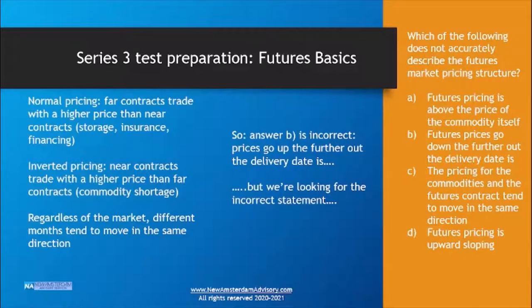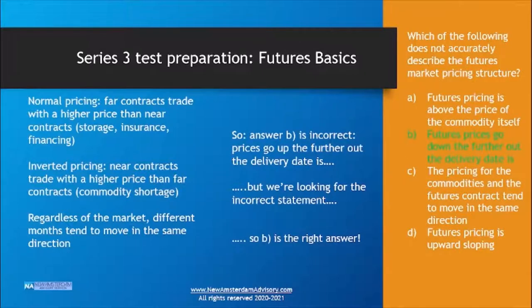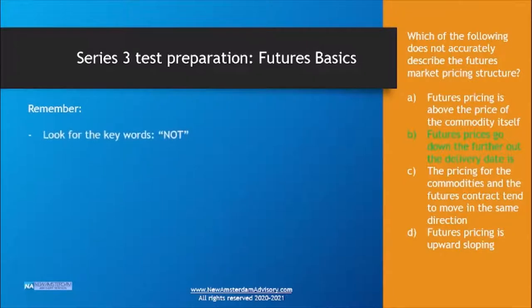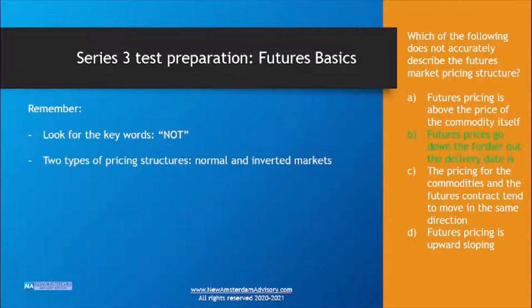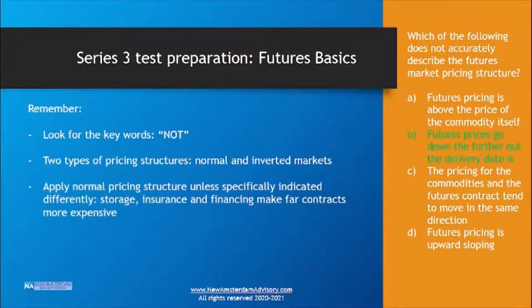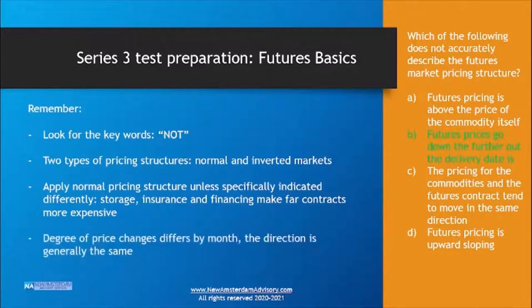Answer B — futures prices go down the further out the delivery date — is incorrect. But remember, we're looking for the incorrect statement, so B is the right answer. Key takeaways: always look for the keyword 'not.' We touched on normal and inverted markets — unless indicated otherwise, assume normal pricing. Storage, insurance, and financing costs make far contracts more expensive than near contracts. Although the degree of price change can differ by month, the direction is generally the same.